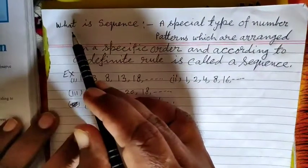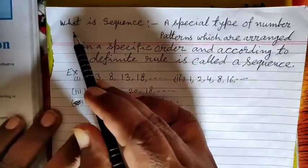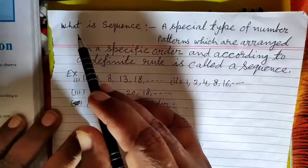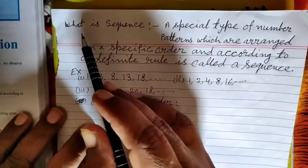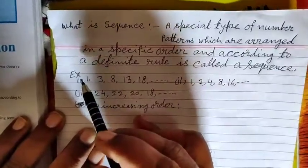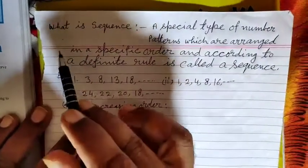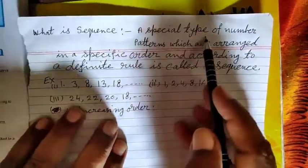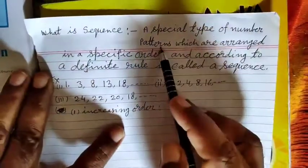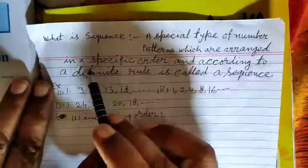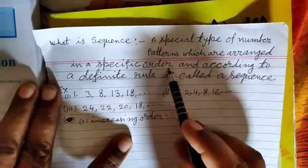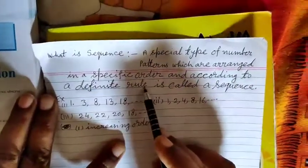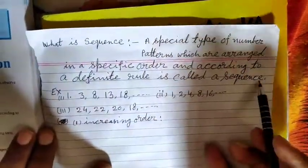Dear students, today we are going to start Arithmetic and Geometric Progression, Chapter 9. A question: what is a sequence? A special type of number patterns which are arranged in a specific order and according to a definite rule is called a sequence.